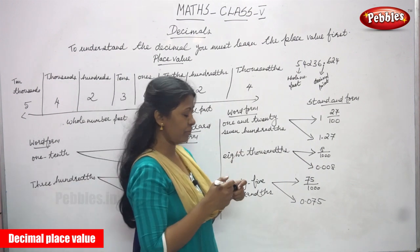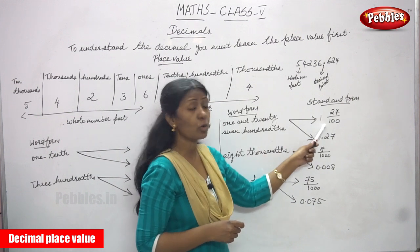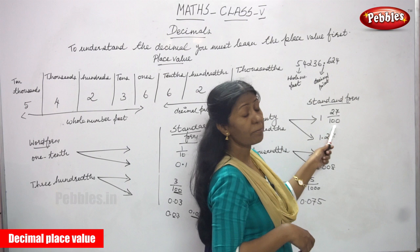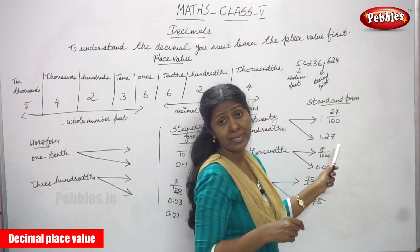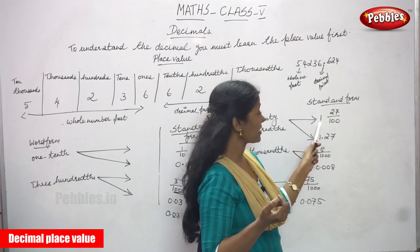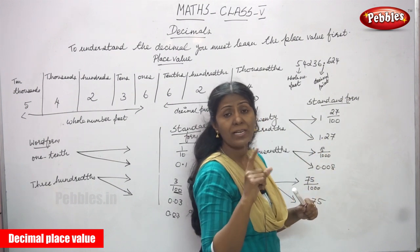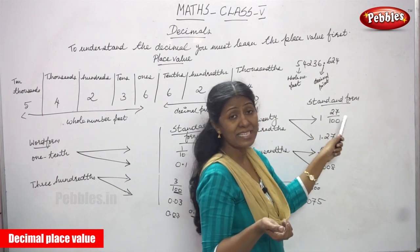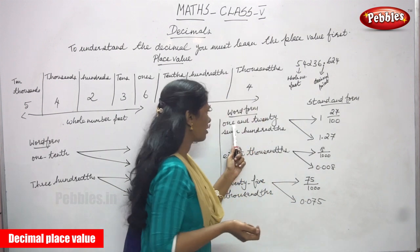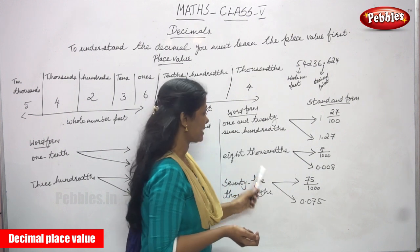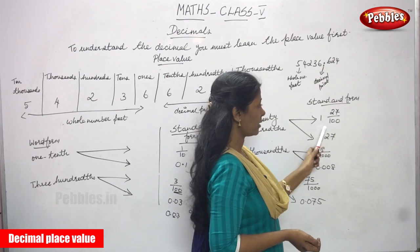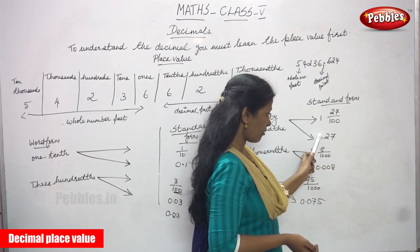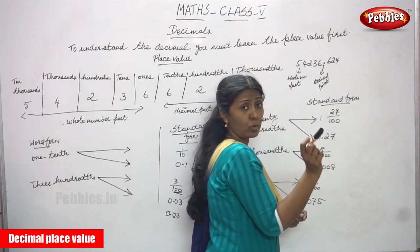The next example is one and twenty-seven hundredths. That is: one is a whole number and twenty-seven by hundred. It is in a mixed fraction form — one is a whole number and the remaining is a proper fraction. Mixed fraction is composed of a whole number and a proper fraction. So: one and twenty-seven hundredths means one and twenty-seven by hundred. One is the whole number and after the point you write two seven.